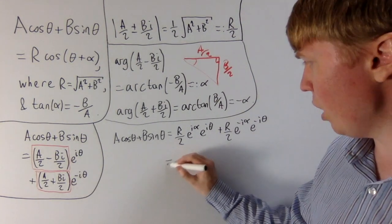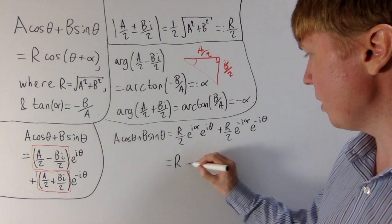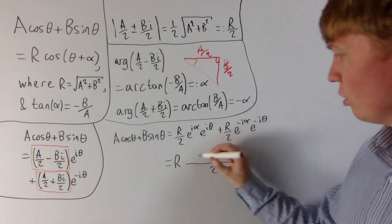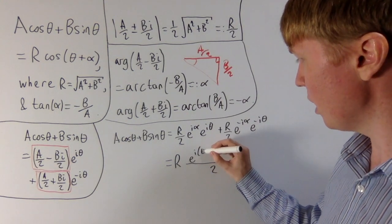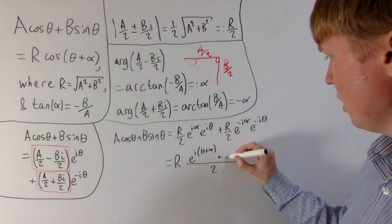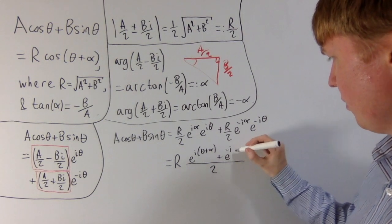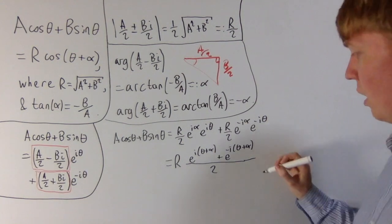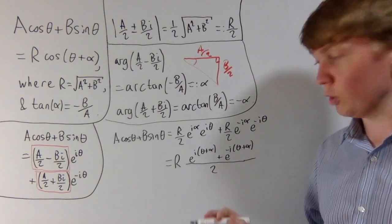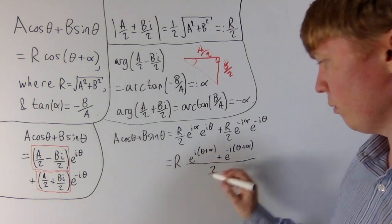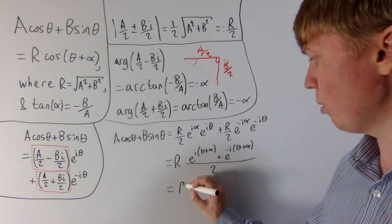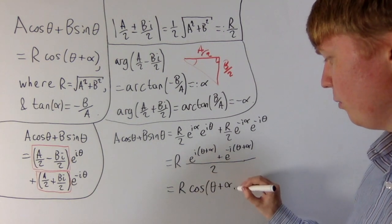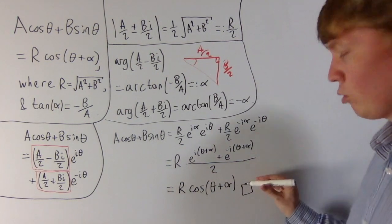If we take out this factor of r, this is equal to r multiplied by, then we'll take the half here. If we collect together our exponential terms, we'll get e to the i times theta plus alpha, and then plus e to the i with a minus sign, theta plus alpha. This is really interesting now, because don't forget this is actually the complex form of cosine of theta plus alpha, the factor of a half there. So that's why we chose to take that out. Then we get r cosine of theta plus alpha, which is what we were trying to show there.